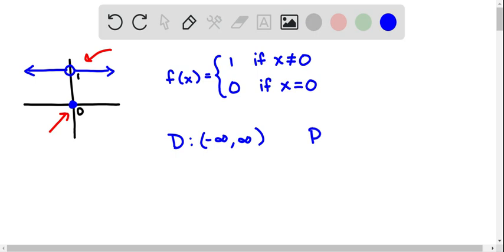And for the range, it only goes through two different y values. It goes through the y value of 0 at that point there at the bottom, and it goes through a y value of 1 along the line at the top.